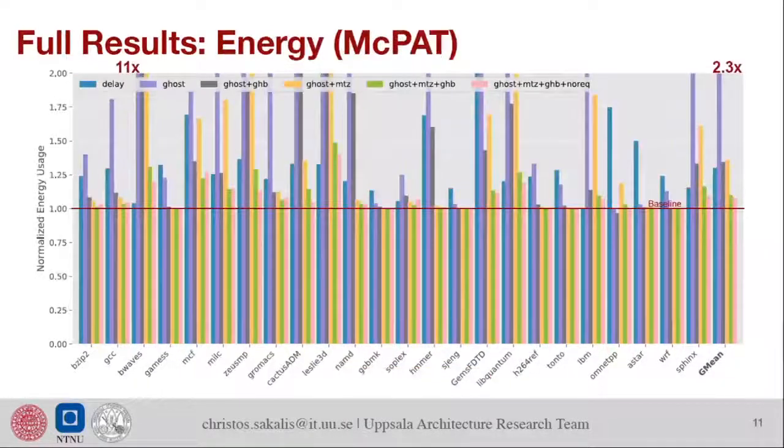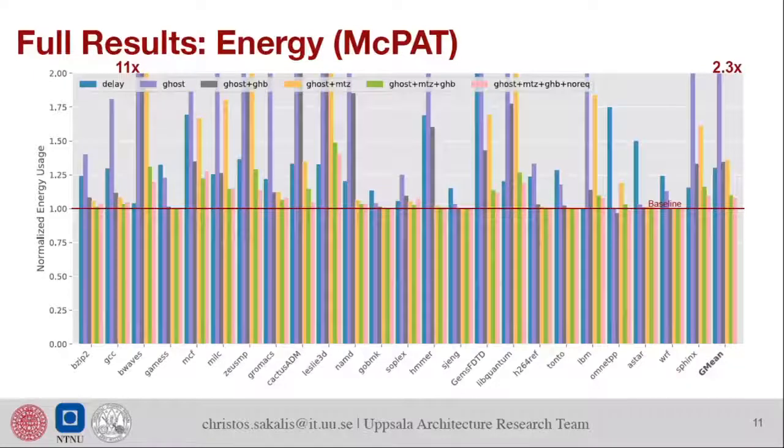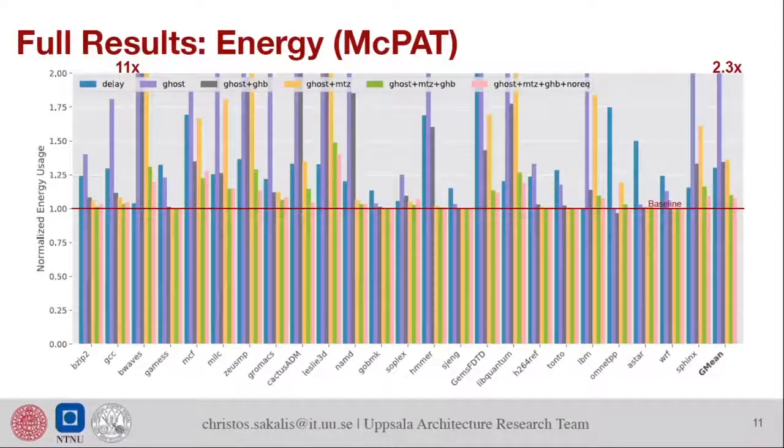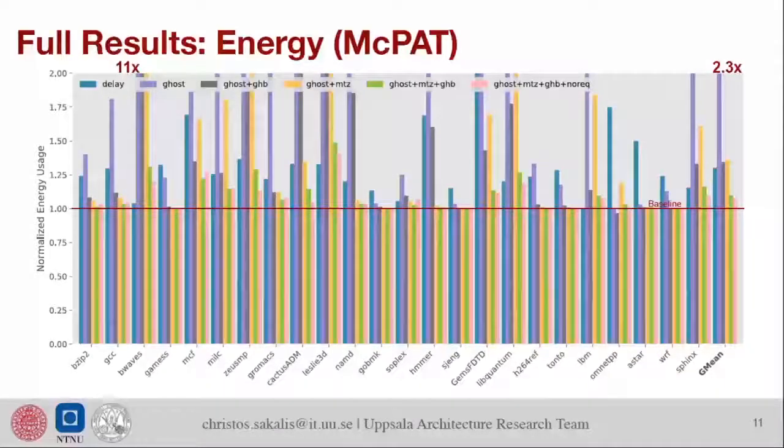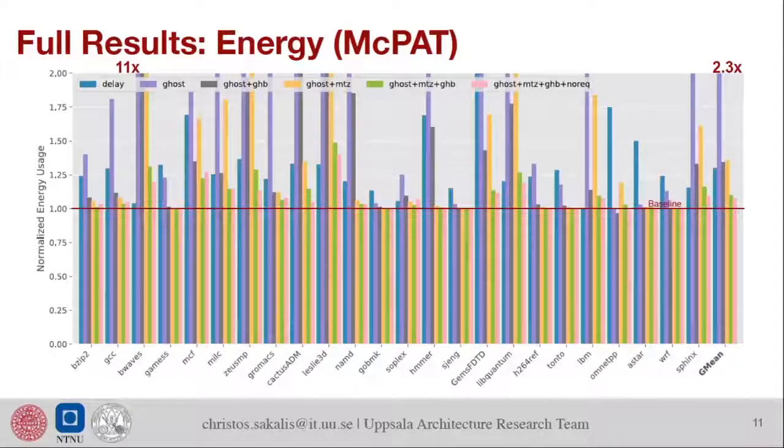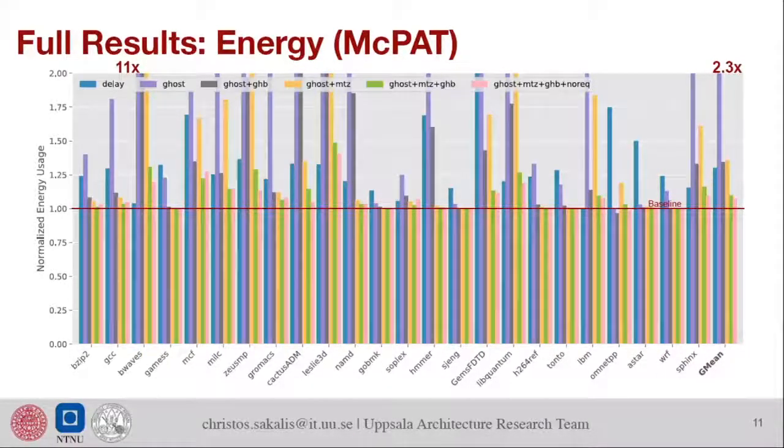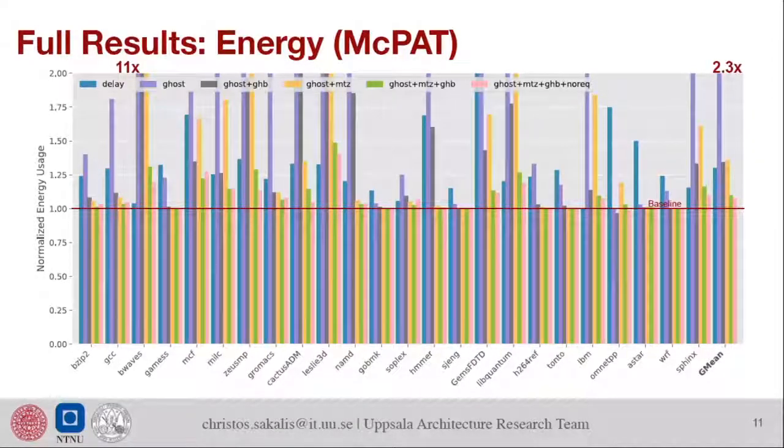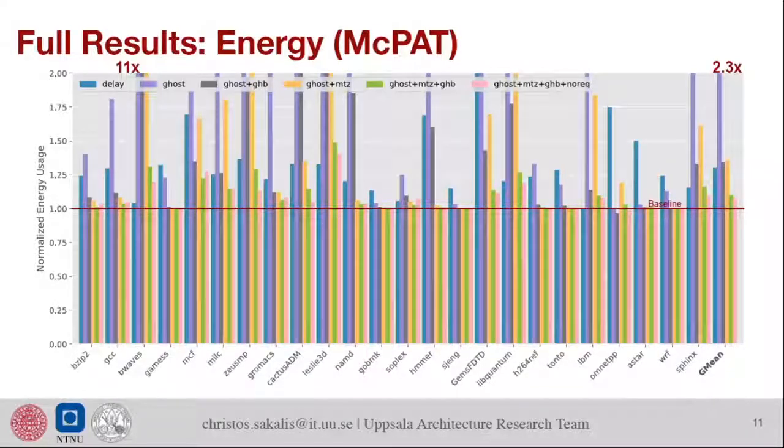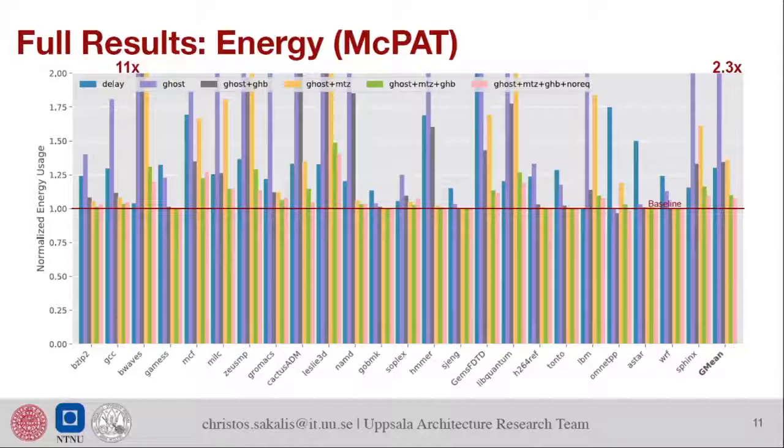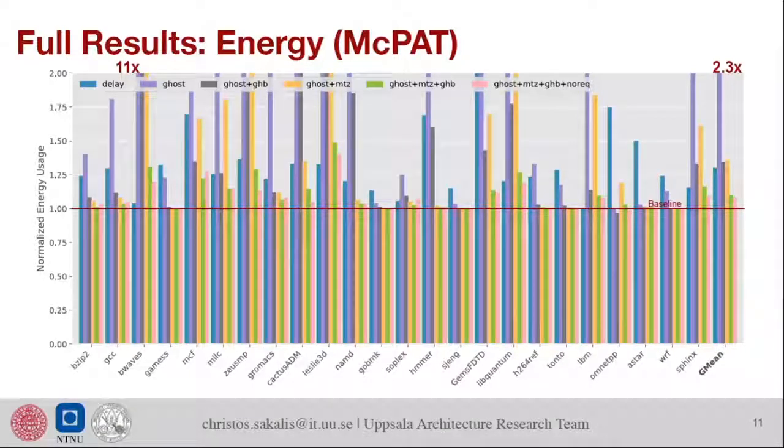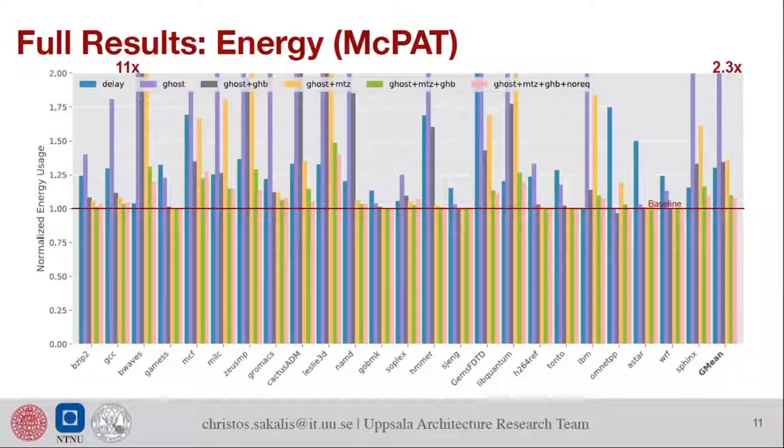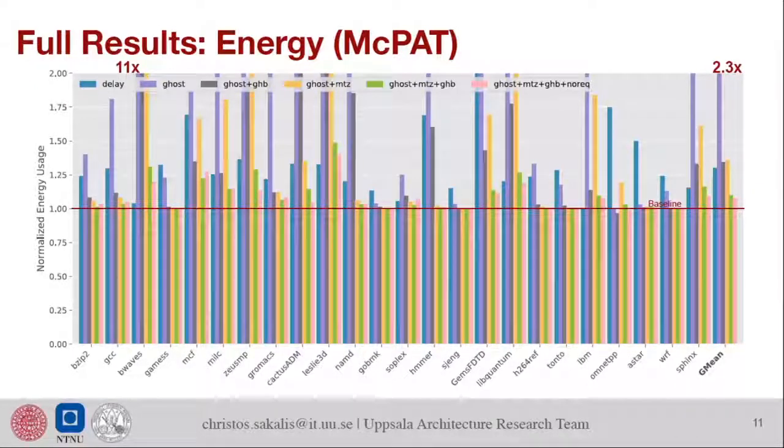Of course performance is not everything, we also care about energy. These energy numbers are for McPAT, so take them with a grain of salt, obviously. We see that we have some energy we waste if we do the solution with the ghost buffer and the materialization, but the alternative solutions are quite worse. For example, this purple line which is the ghost where we just make everything invisible, which someone could argue is the most secure solution, it's 2.3 times less energy efficient. There is one benchmark that goes to 11x. The reason is that this benchmark has 600 times more DRAM accesses when you do ghosts than the baseline, which I wasn't even sure that was possible.